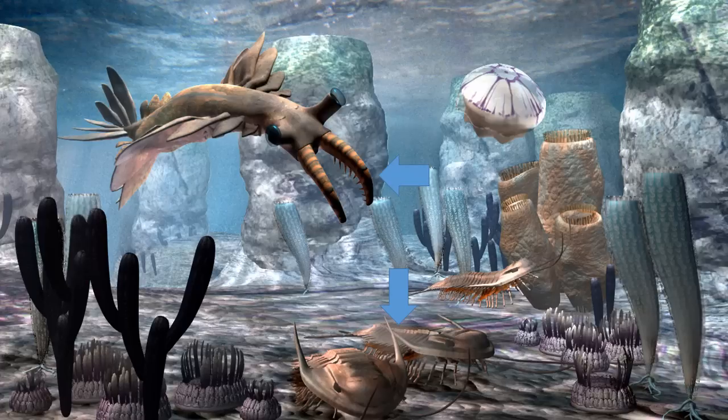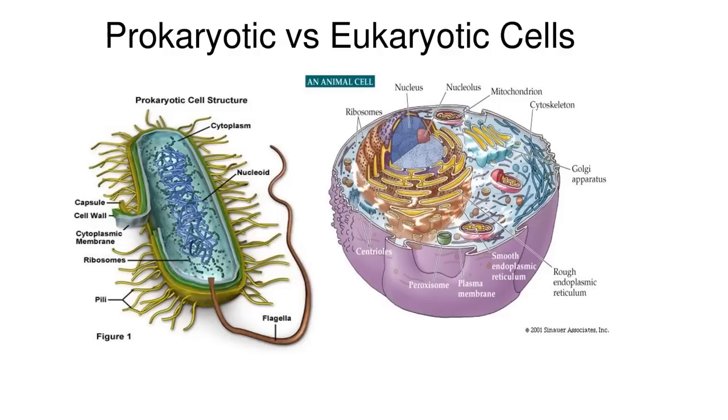The reason I bring up the Cambrian explosion is because of the difference between a prokaryote and a eukaryote. A prokaryotic cell has no nucleus. A eukaryote with eukaryotic cells has a nucleus. All animals and all plants are eukaryotes. You have a nucleus. Your dog has a nucleus. Bacteria and some protozoans have no nucleus. Eukaryotic cells rose to power in the Cambrian period during the Cambrian explosion.